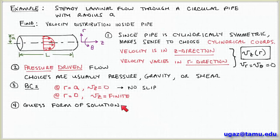We've used our intuition to guess the form of the solution. We know that the velocity has to be zero at the walls and non-zero somewhere in the interior, so we're postulating some shape of this velocity distribution. The equation for this shape is what we want to obtain by solving the equations of motion. Now we can go on to step 5, which is to simplify the conservation laws we've already derived for the case of the problem at hand.